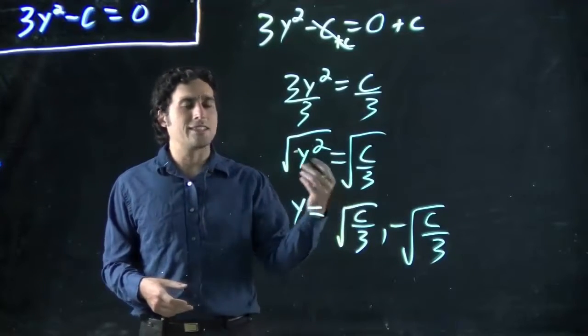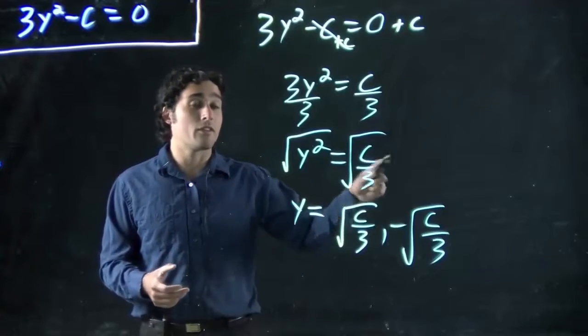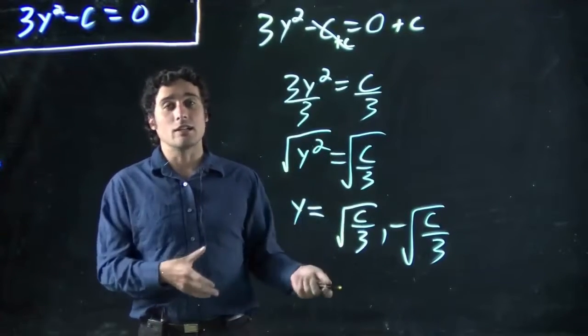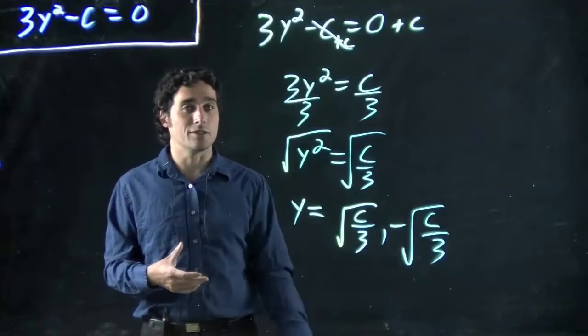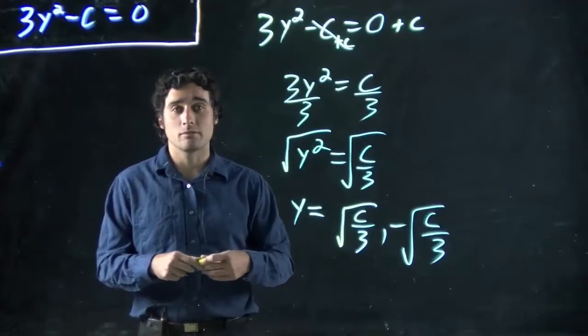Maybe later we say c is 27. Well, 27 divided by 3 is 9. The square root of that is 3. So 3 and minus 3 would both be the solutions. This just shows you a general case and hopefully helps. Thank you.